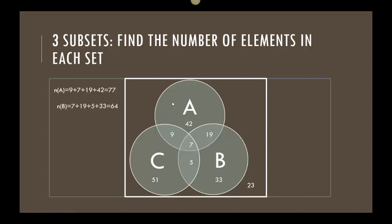Same thing. Let's move over to set B. B, again, it's a circle. In this circle, I see the numbers 7, 19, 5, and 33. Order doesn't matter because we're adding. I add those numbers up and it says there's a total of 64 elements in my set B.